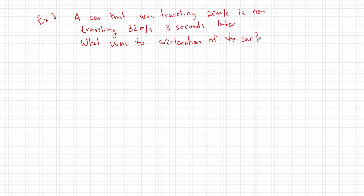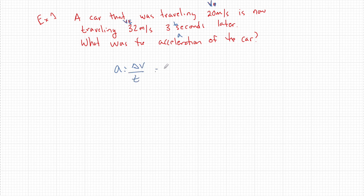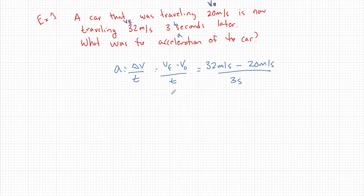Example one: a car was traveling 20 meters per second, now traveling 32 meters per second three seconds later. What was the acceleration? We have initial velocity 20 m/s, final velocity 32 m/s, and t equals 3 seconds. A equals delta V over t, which equals V-final minus V-initial over t: 32 minus 20 meters per second, divided by 3 seconds. The acceleration equals 4 meters per second squared. Acceleration is positive, meaning the car sped up — that's a good way to check yourself.